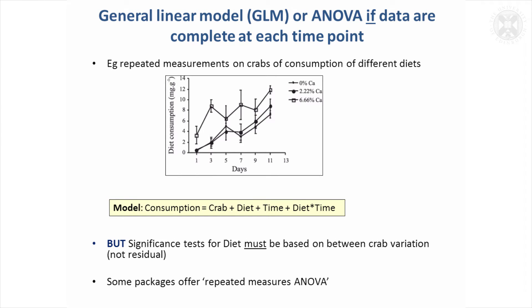So just to look at the fixed effects approach first. Looking at that crab data, a model we might consider fitting would be that the amount of consumption, we'll fit crab in the model to get rid of some of the variability between the individual crabs, the diet that they had, the time effect, and the diet by time interaction. So we can see if the diet effect differs with time, and it also allows us to estimate the diet effect at different time points if we want to.